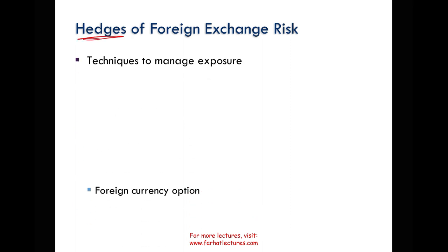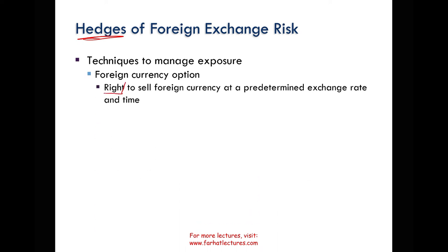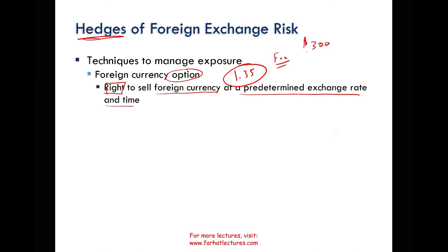Techniques to manage exposure — and we'll talk about these much more down the road — include foreign currency options. A foreign currency option gives us the right, not the obligation, to sell foreign currency at a predetermined exchange rate and time. For example, if we have this receivable, we could have bought a foreign currency option that would guarantee we will sell the U.K. pounds we'll be receiving at $1.35. But we have to pay a fee for that — for example, $300. By paying a fee to someone, that someone would guarantee that for a specific period of time, they will buy U.K. pounds from us at $1.35.